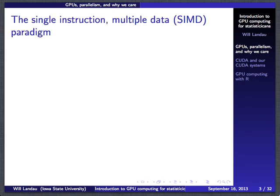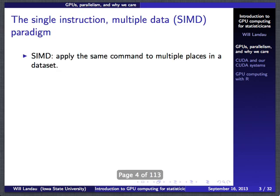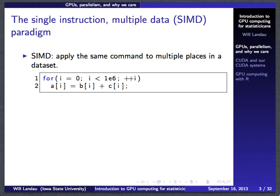There's this thing called the single instruction multiple data paradigm, where you take a single function or set of code and apply it to different parts of data over and over again. Usually this is done sequentially — for example, a for loop in R syntax where you take a vector A of a million elements, a vector B, and add the corresponding entries, storing them in A. Each loop iteration happens sequentially, so this loop is really long.